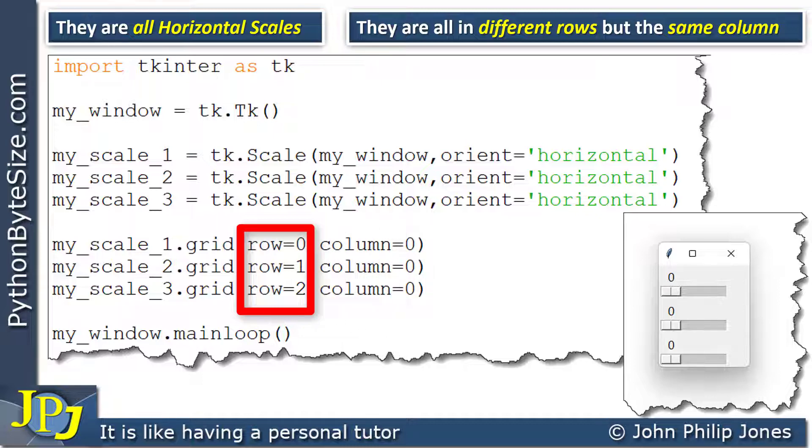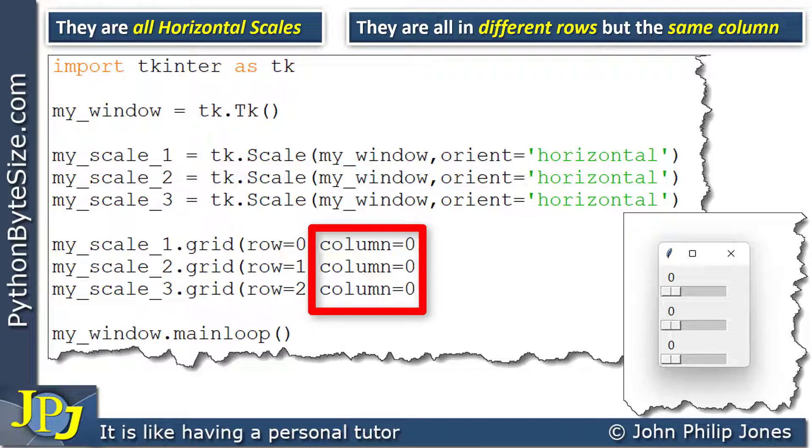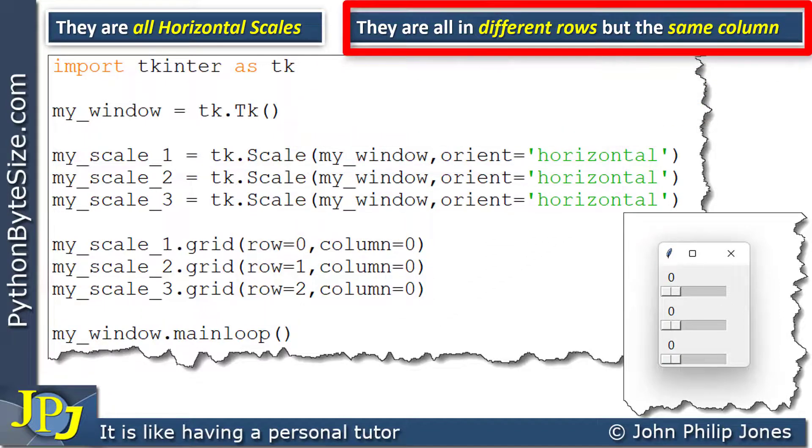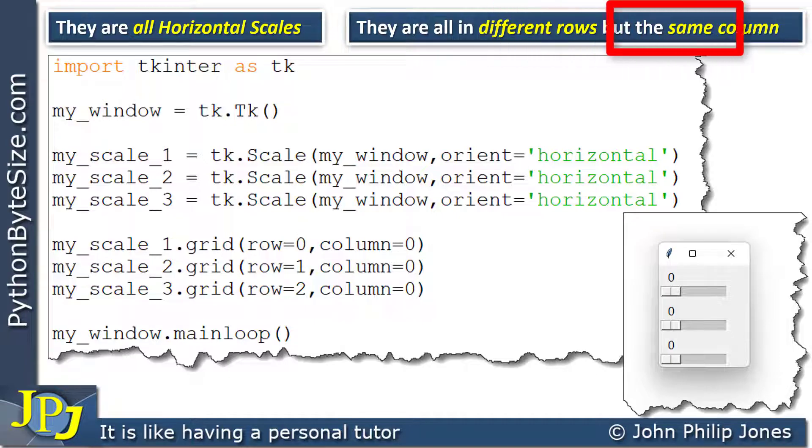If we look to the row setting, we can see that they are all different. They go from row 0 to 1 to 2. Whereas if we look at the column, we can see that the column is set to 0 in every case. So what we have achieved here is the implementation of the information that I've brought from the last slide, which is shown here. They are all in different rows, but the same column.